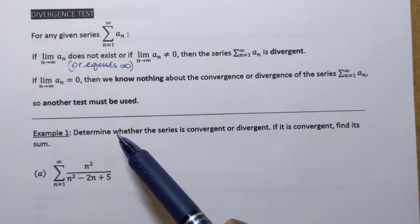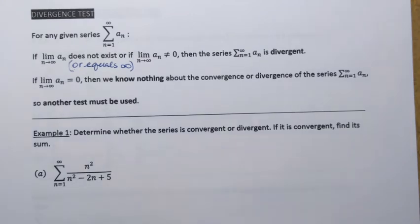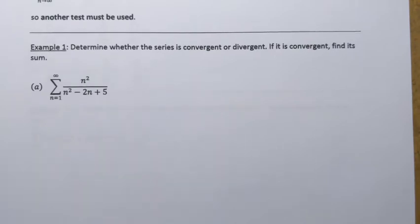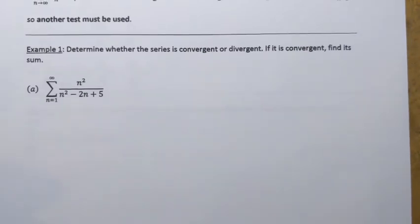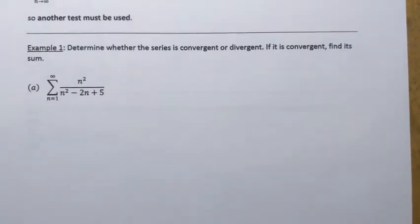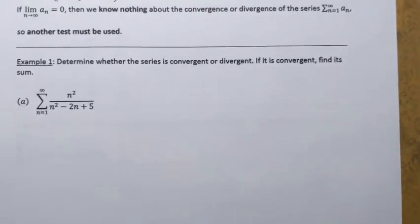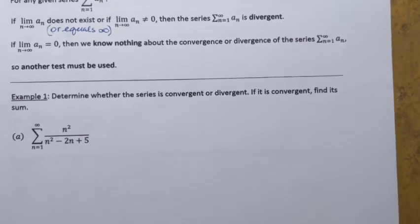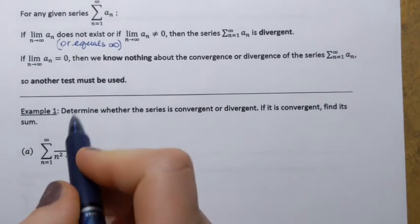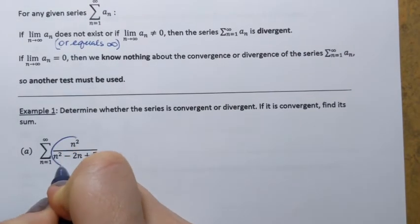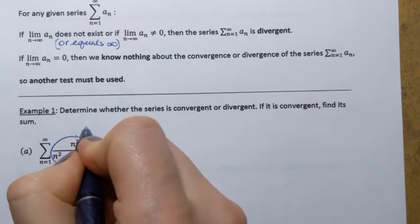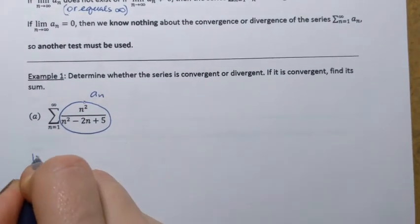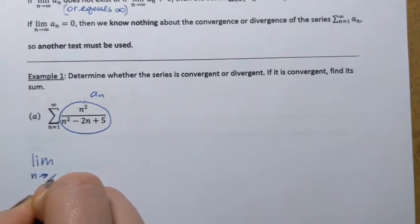This is how the divergence test works. Let's try two examples. In both of them we need to determine whether the series is convergent or divergent, and if it's convergent, we need to find its sum. According to this test, we have to take the limit of the general term a sub n. So this is a sub n — let's find its limit as n goes to infinity.